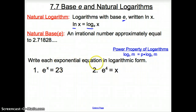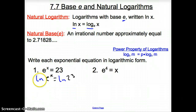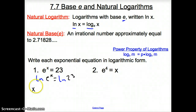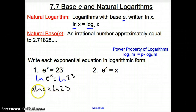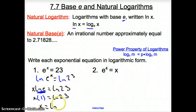First, we're asked to write each exponential equation in logarithmic form. We take the natural log of both sides: ln of E to the X equals ln of 23. The power property brings the exponent X in front, giving X times the natural log of E equals ln of 23. Since the natural log of E equals 1, we get X equals the natural log of 23.